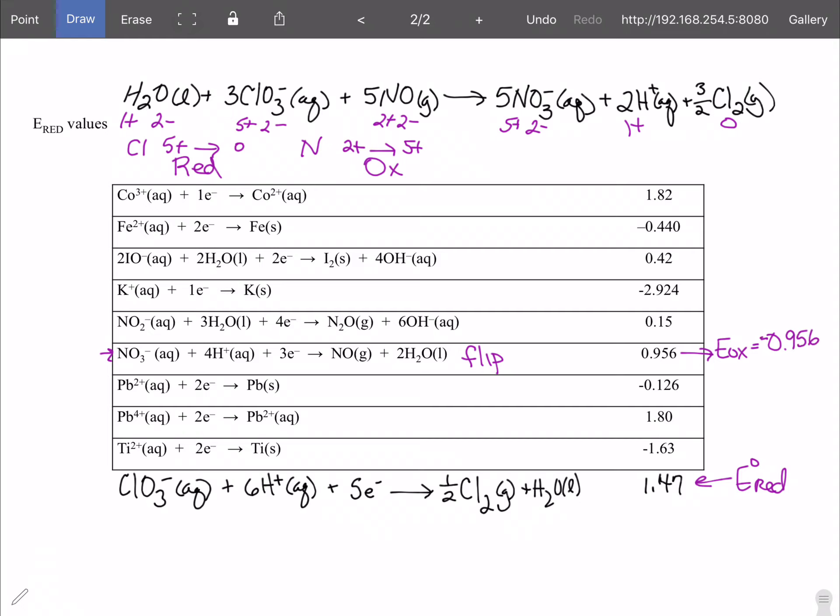However that is not the same as our equation so we're going to flip it and that means that this E ox value comes out to be flipped as well which means it's negative 0.956. So our E red value was positive 1.47 because it is an E red. So that means if we find our E cell our E cell standard will be E ox standard plus E red which means that it's equal to negative 0.956 plus 1.47 and these are all in volts so our E cell will be 0.514 volts.